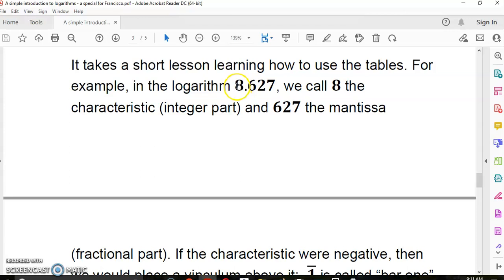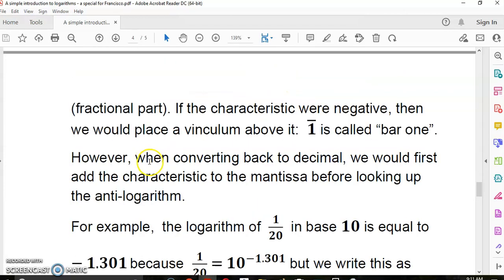It takes a short lesson learning how to use the tables. So this logarithm here, for example, we call 8 the characteristic, which is the same as the integer part or the part that appears before the radix, this part here, 8, and the 627, which is the mantissa, the fractional part, appearing after the radix. If the characteristic were negative, then we would place a vinculum above it. This would be called bar 1.